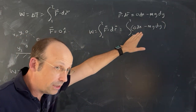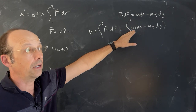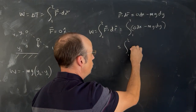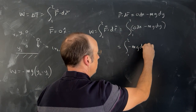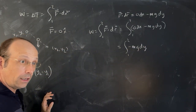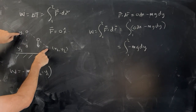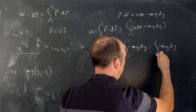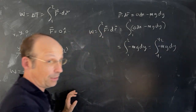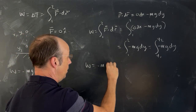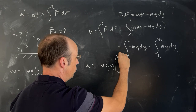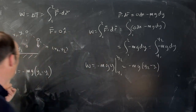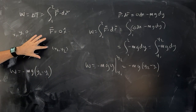You can see we have a problem there, but 0 times dx is 0, so that makes it easier. I get the integral of negative mg dy. This only depends on Y, so I only need the Y coordinates of these points. I can write this as the integral of negative mg dy from Y1 to Y2 - the exact same integral as before. So the work is negative mg(Y2 minus Y1). It's the same thing.